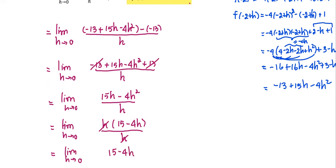As shown here, 15 minus 4h is a polynomial function in terms of h. To compute the limit is the same as computing the function value — we replace h with 0. Then we get 15 minus 0, or just 15, as the result for this problem.